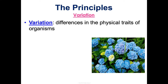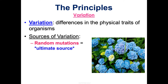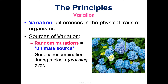Next is variation — there have to already be differences in the physical traits of organisms that make some better and some worse. These come from several sources. The ultimate source is random mutations, which give some organisms different traits than others. For asexual reproducers like bacteria, mutations are the only way to create variation since they don't do meiosis. Sexual reproduction also creates variation through crossing over in prophase one and how genes assort themselves during meiosis.